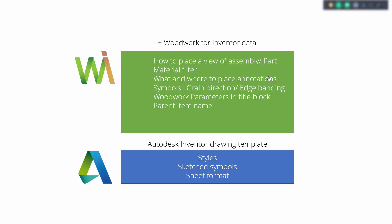We can also enter the parent item name into the view of a part, which is a very significant improvement when working with big assemblies — you can know what the parent is for a given part. Besides that, we also generate hole tables and annotations automatically, and produce dimensions for the range box and the hole link scheme.